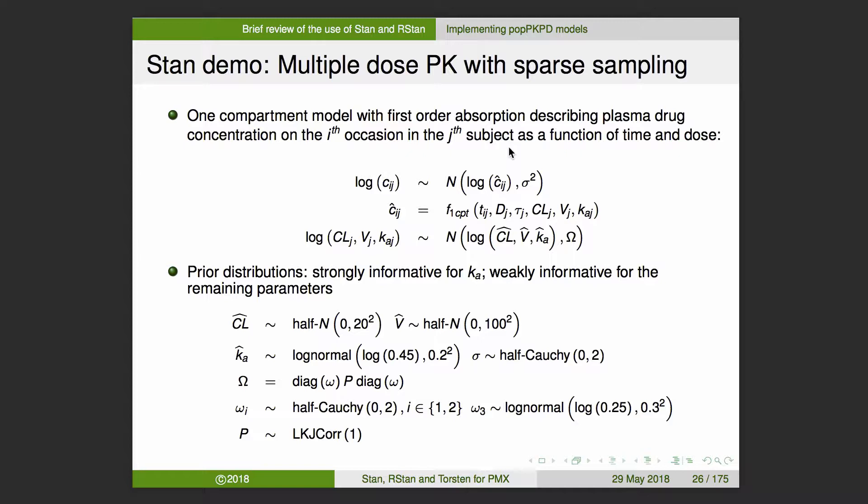With the sparse data, I know I don't have enough data to characterize Ka. But I do have prior data from, you know, early phase one studies where they were more frequently sampled. From that, I'm going to construct an informative prior for Ka. But I'm still going to let the data tell the story for the other ones and use weakly informative priors for the remaining parameters.